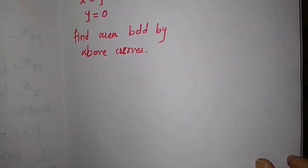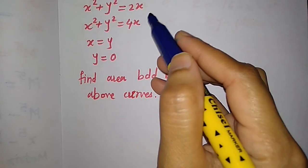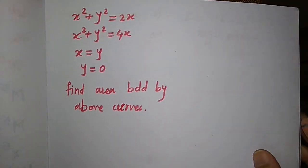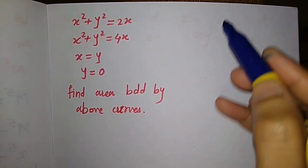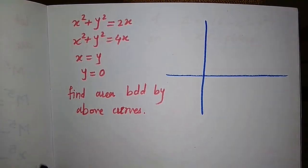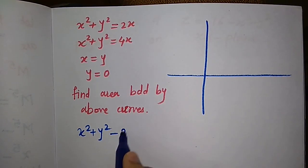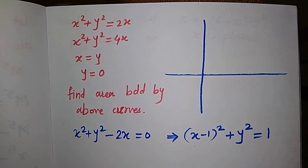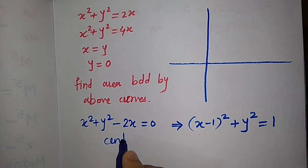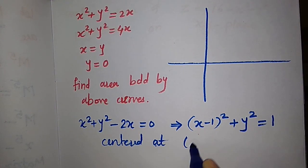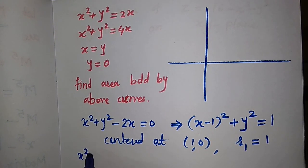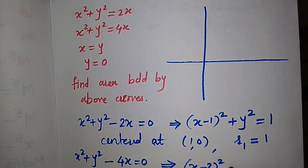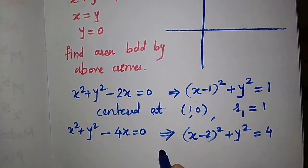Now let us solve another question. We have four curves: x² + y² = 2x, x² + y² = 4x, x = y, and y = 0, and we must find the area bounded by these curves. First, rewrite: x² + y² = 2x becomes (x-1)² + y² = 1, a circle centered at (1, 0) with radius r₁ = 1.